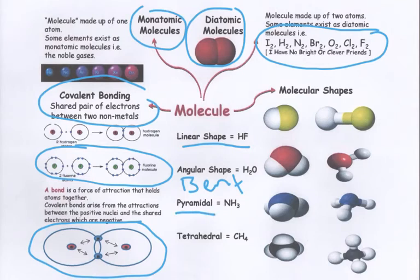We can have a pyramid shape, where we have a ratio of one to three, as in ammonia. And we can have a tetrahedral shape, where we have a ratio of one to four, as in methane.